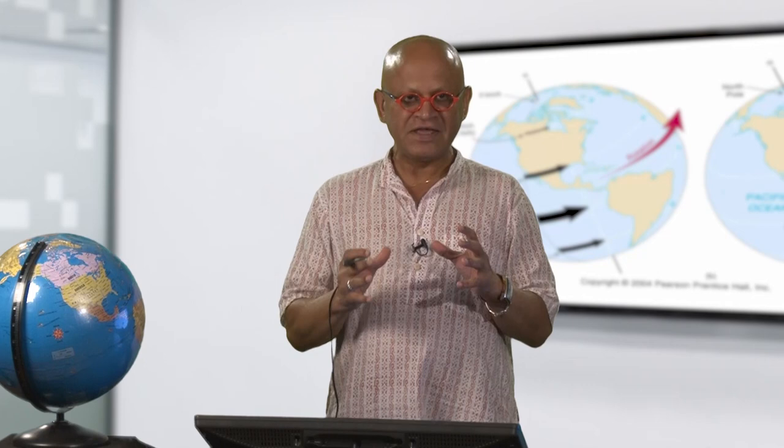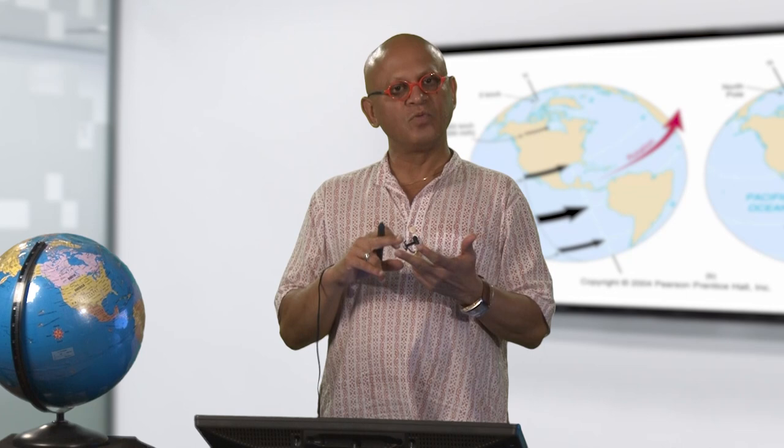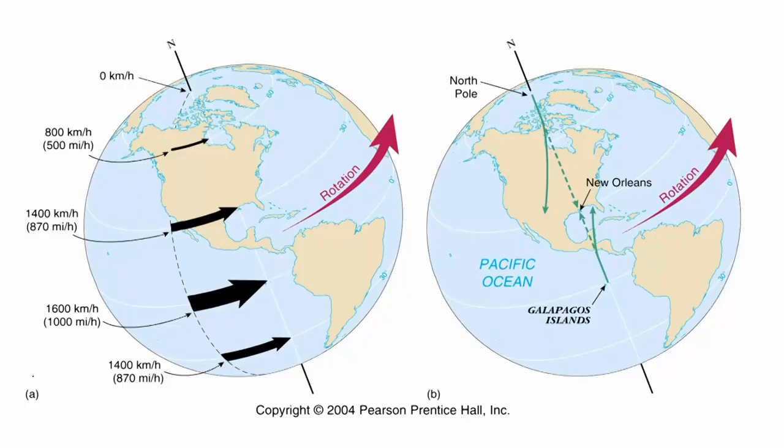This has very interesting effects on everything we can think of — like winds, ocean currents, where the water comes up, where the water goes down, where the air rises, where the air sinks, and so on. So how does it work?